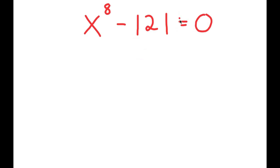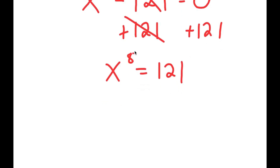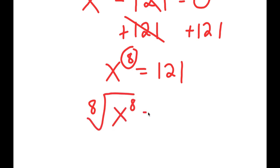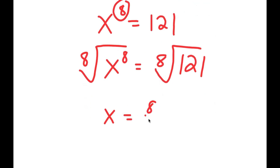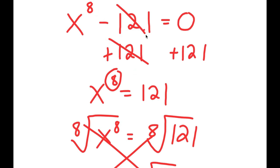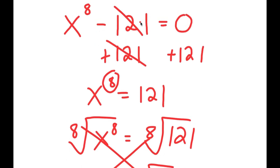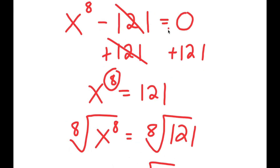What most people would think to do is add 121 on both sides, getting x to the power of 8 equals 121, and then take the 8th root on both sides to get the 8th root of 121. But this method is actually wrong because there are many more solutions than just two to this equation.